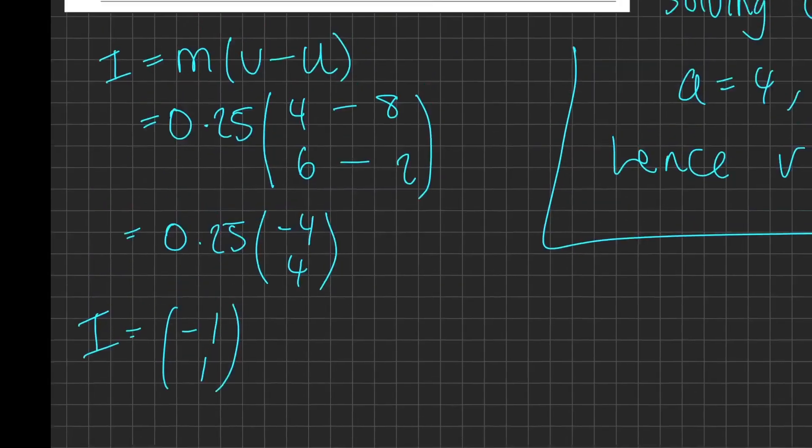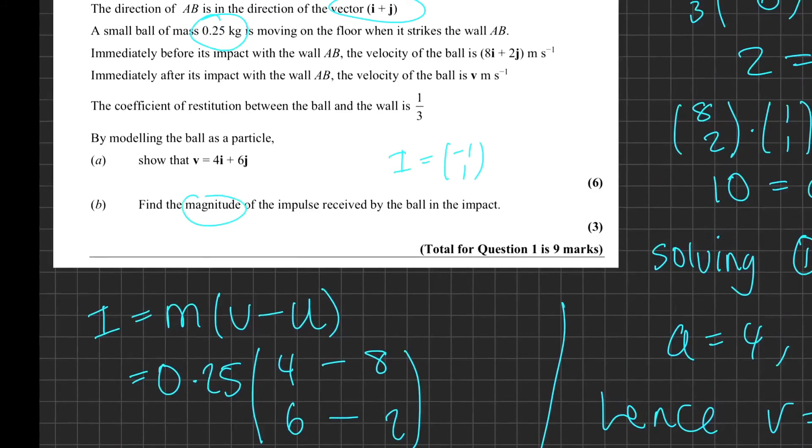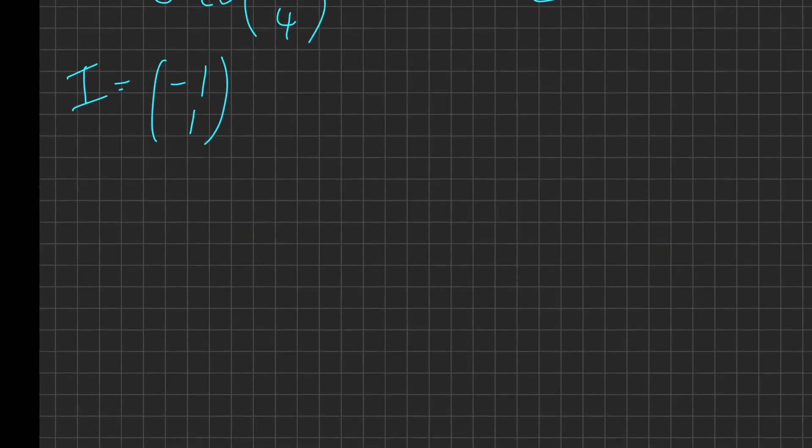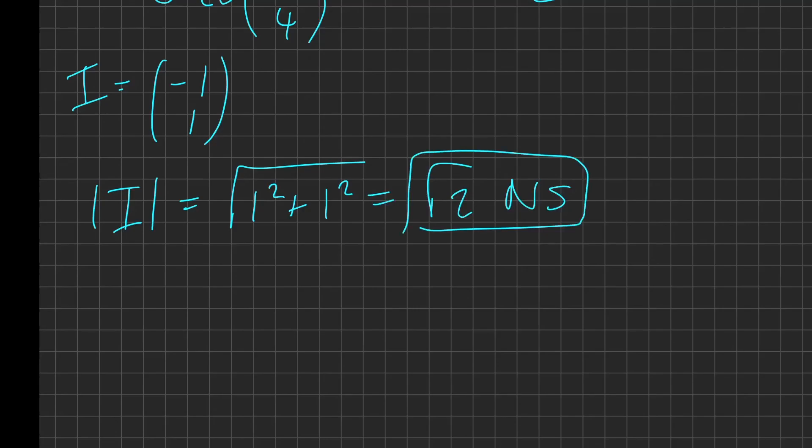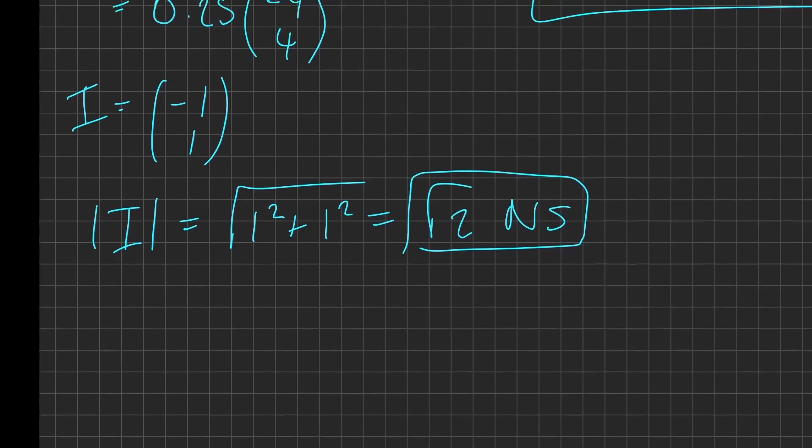So if that's our impulse vector, we're not quite done because it says find the magnitude of the impulse. So the last thing we need to do is find the magnitude of i. That's just the square root of its two components, so we're going to get √2 newton seconds. So that is our magnitude of our impulse.